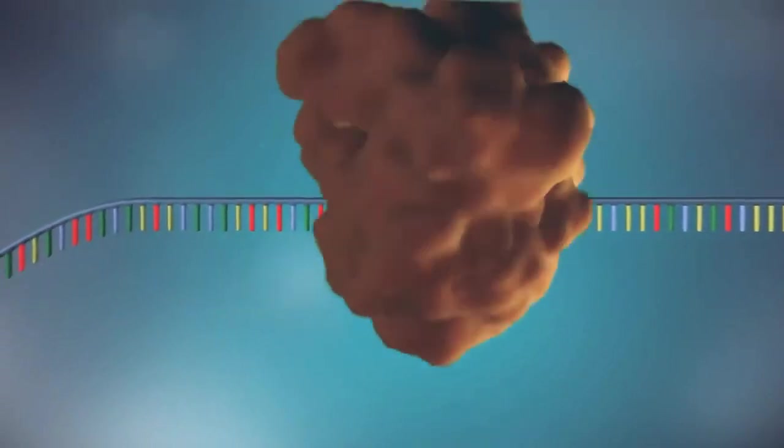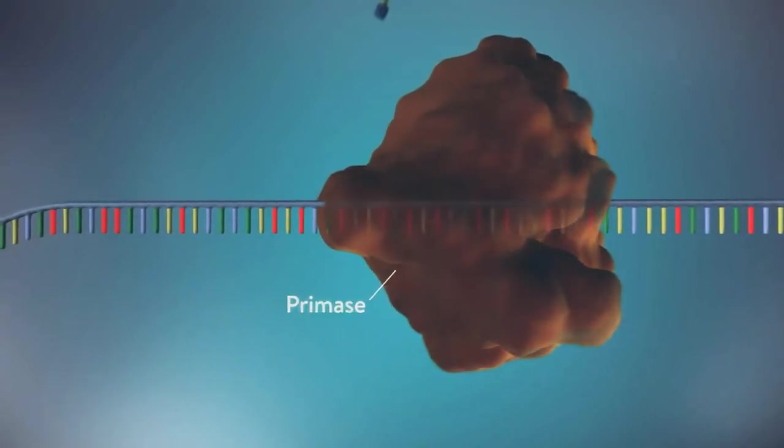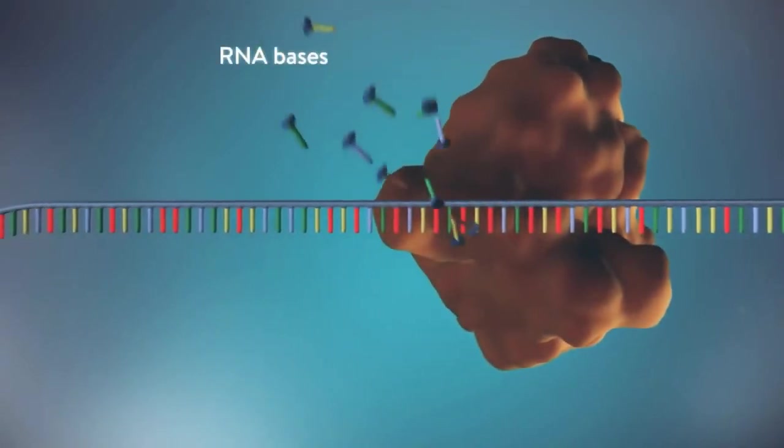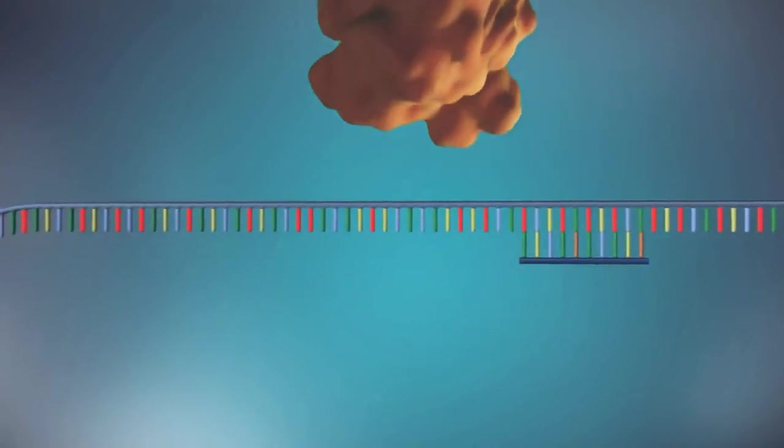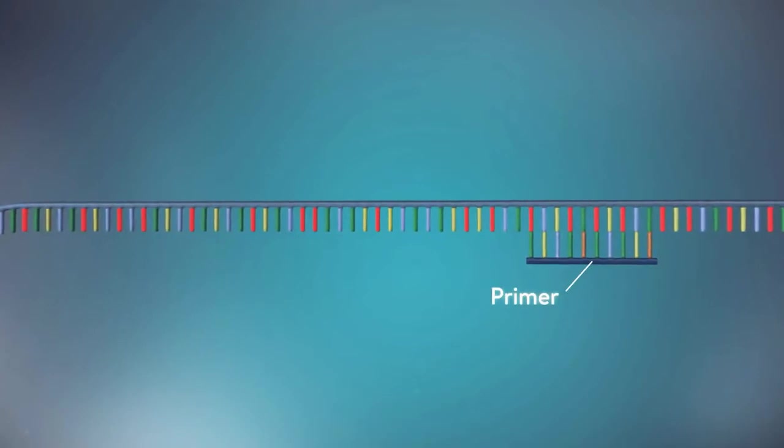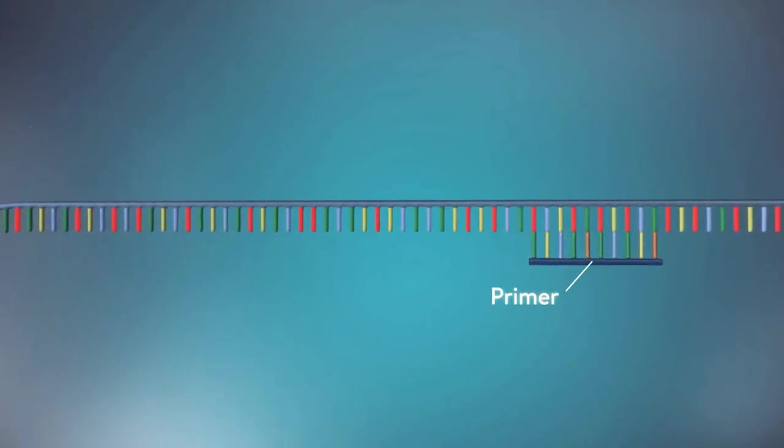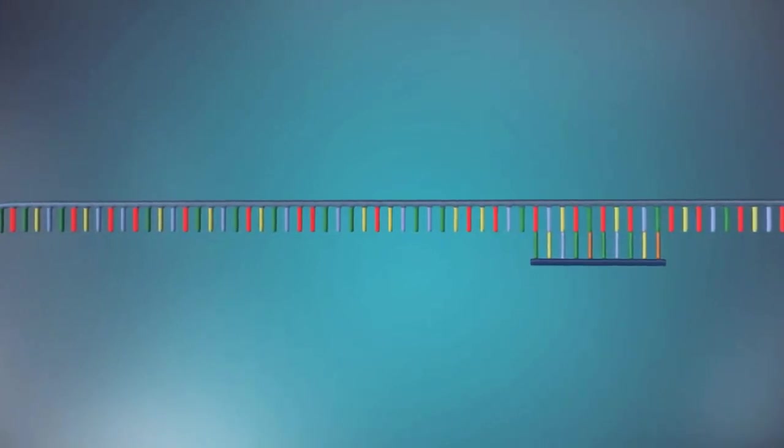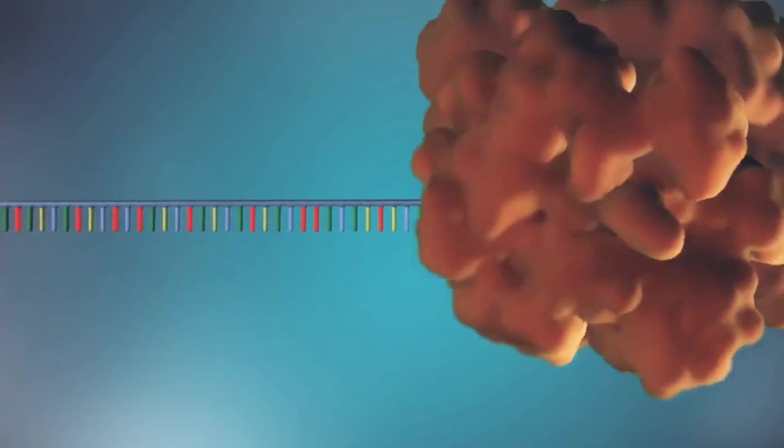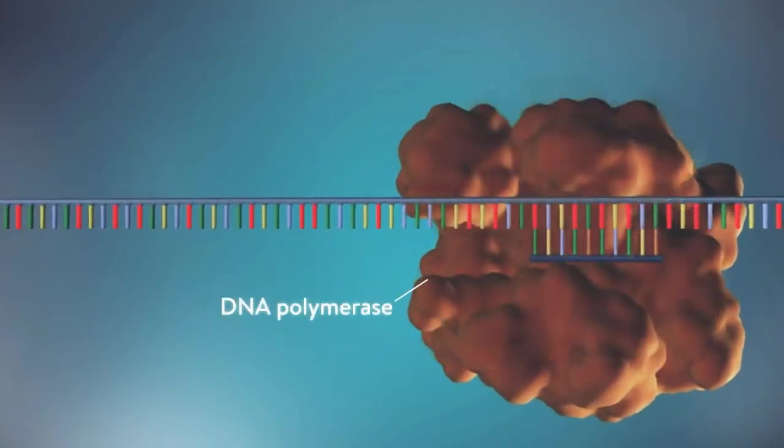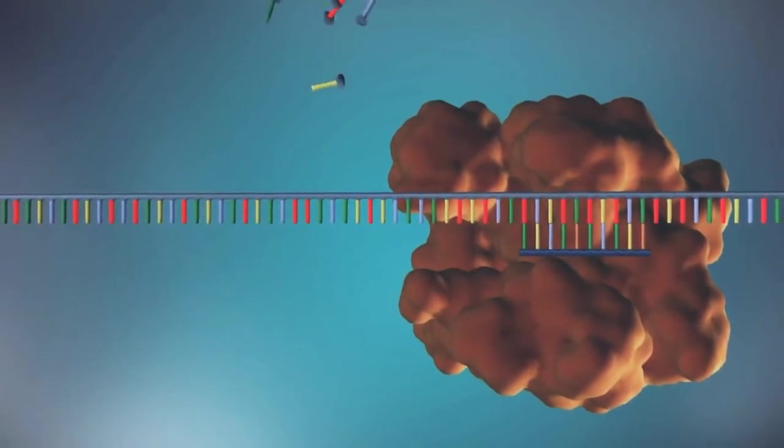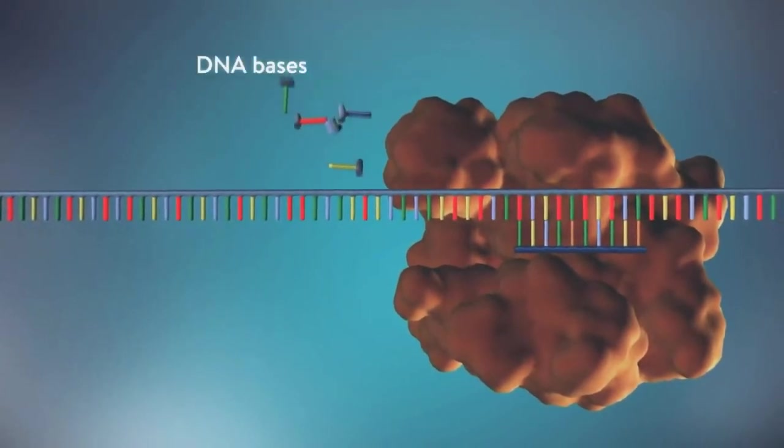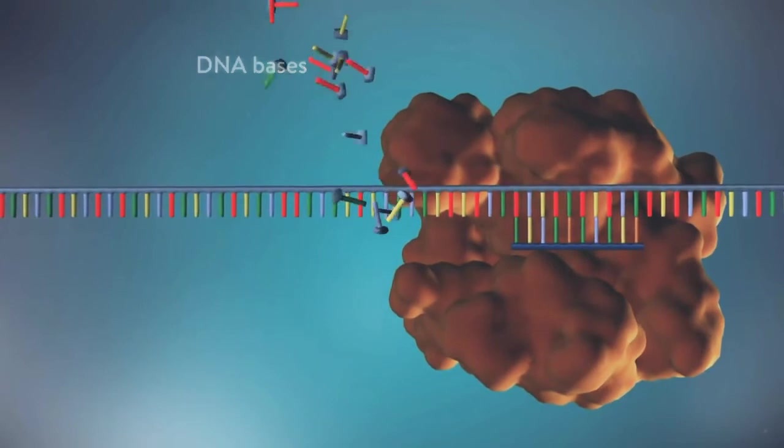An enzyme called primase starts the process. This enzyme makes a small piece of RNA called a primer. This marks the starting point for the construction of the new strand of DNA. An enzyme called DNA polymerase binds to the primer and will make the new strand of DNA. DNA polymerase can only add DNA bases in one direction, from the five prime end to the three prime end.